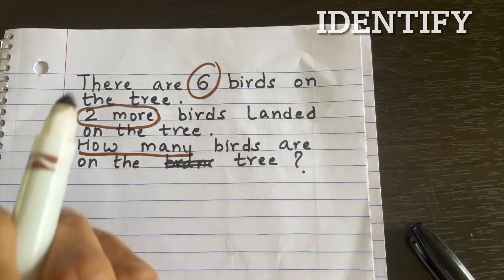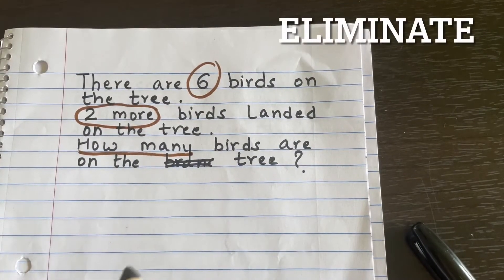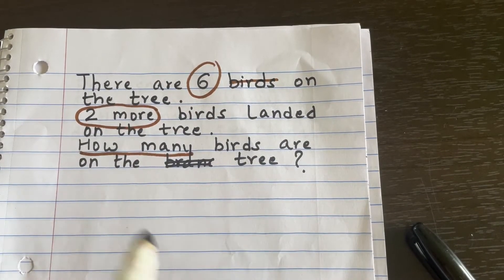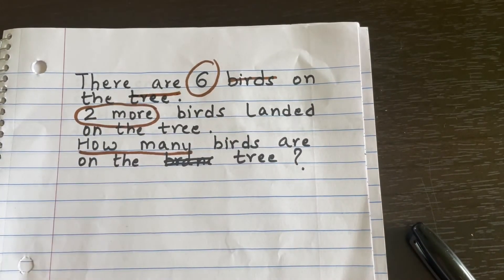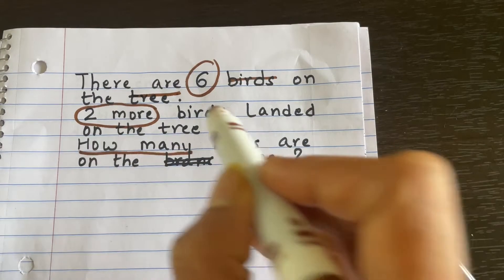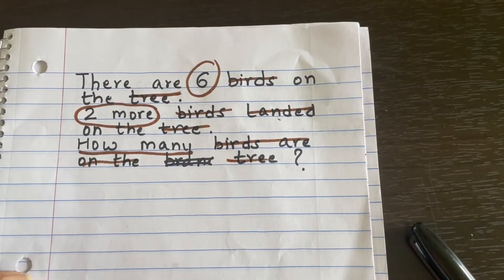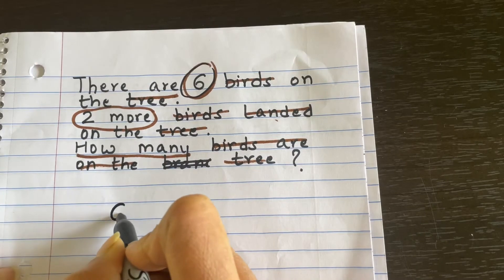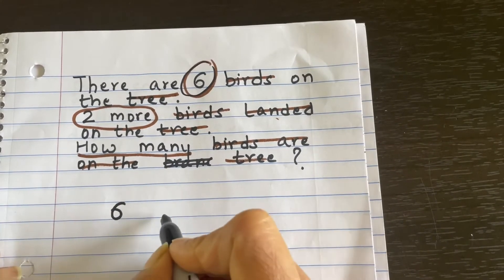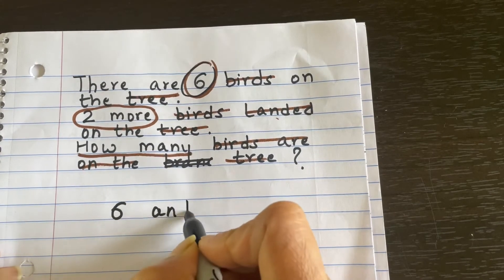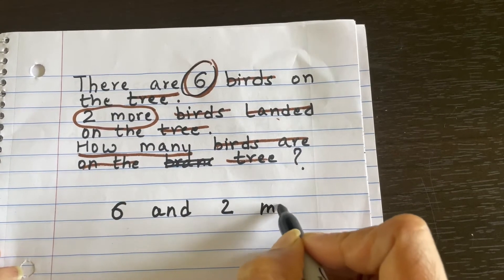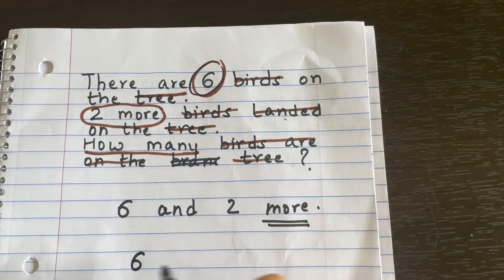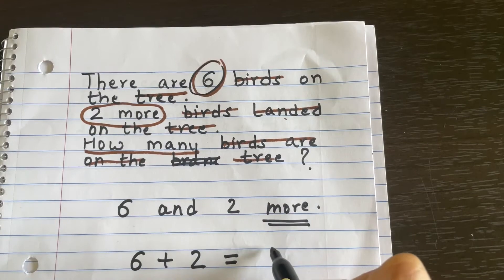Next we are going to eliminate. We don't care whether it's a bird, a bug, or a butterfly. We also don't care if it's a tree or a pole or a house. Now we are just cutting down, left with a few. What are the few here? Six and two more. Your child already knows more means add. So six plus two equals eight.